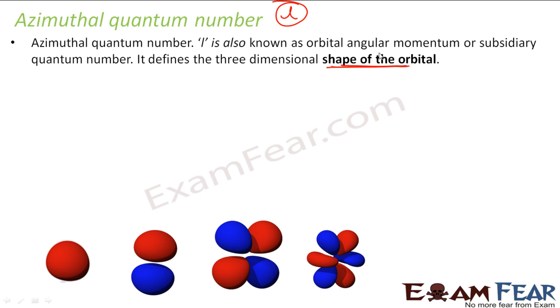The first one was the shell. This is nothing but my subshells. But it defines the shape of orbital. For example, s will have this shape, this shape is for p, this is for d and this is what f.